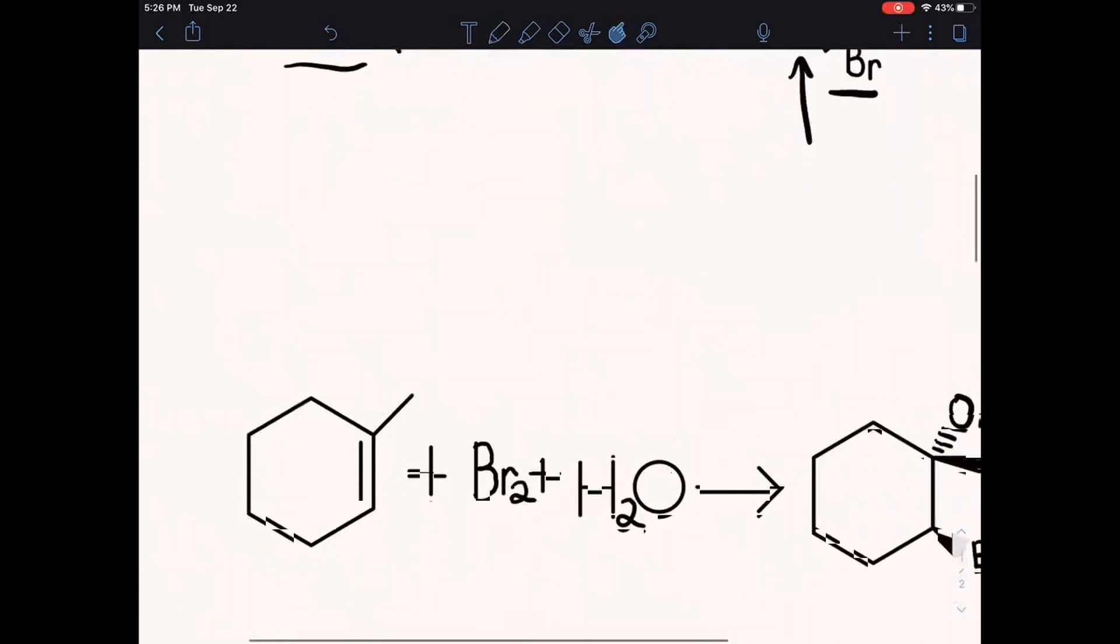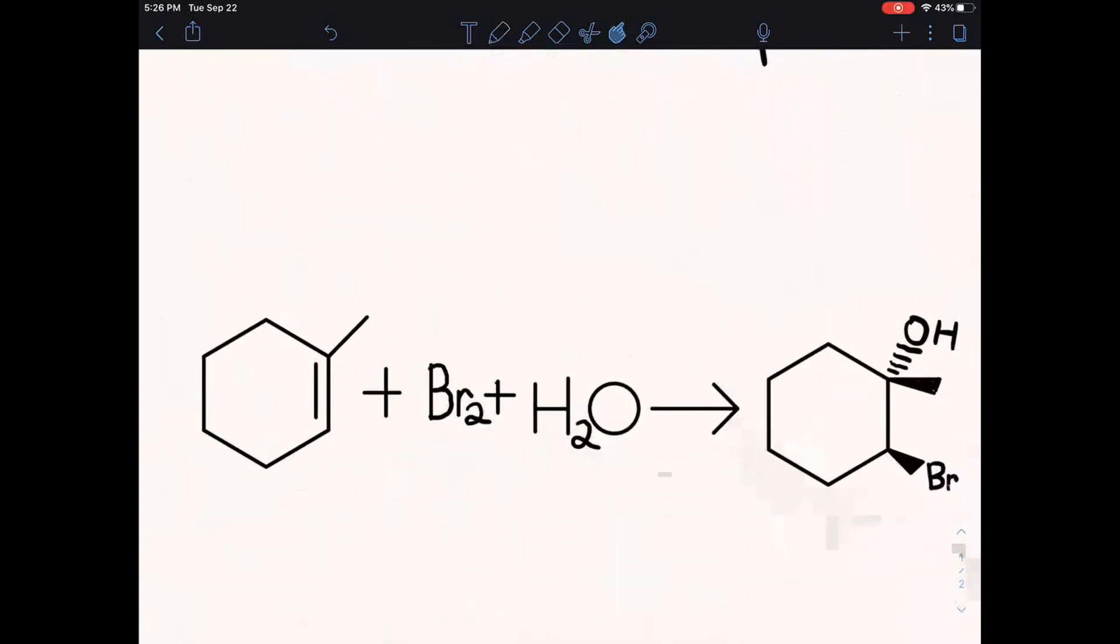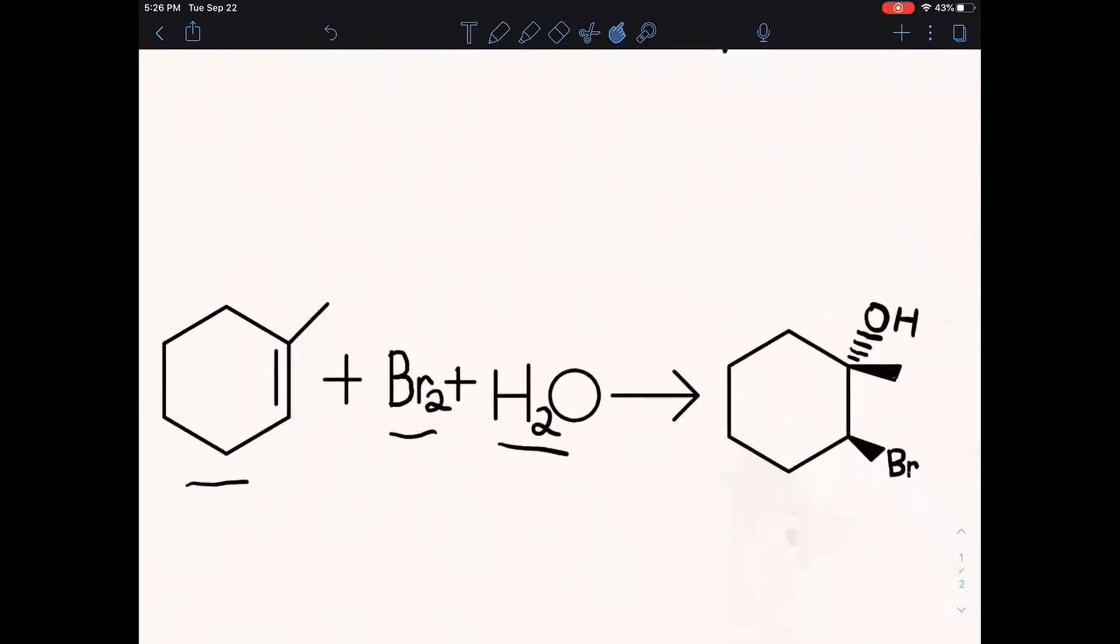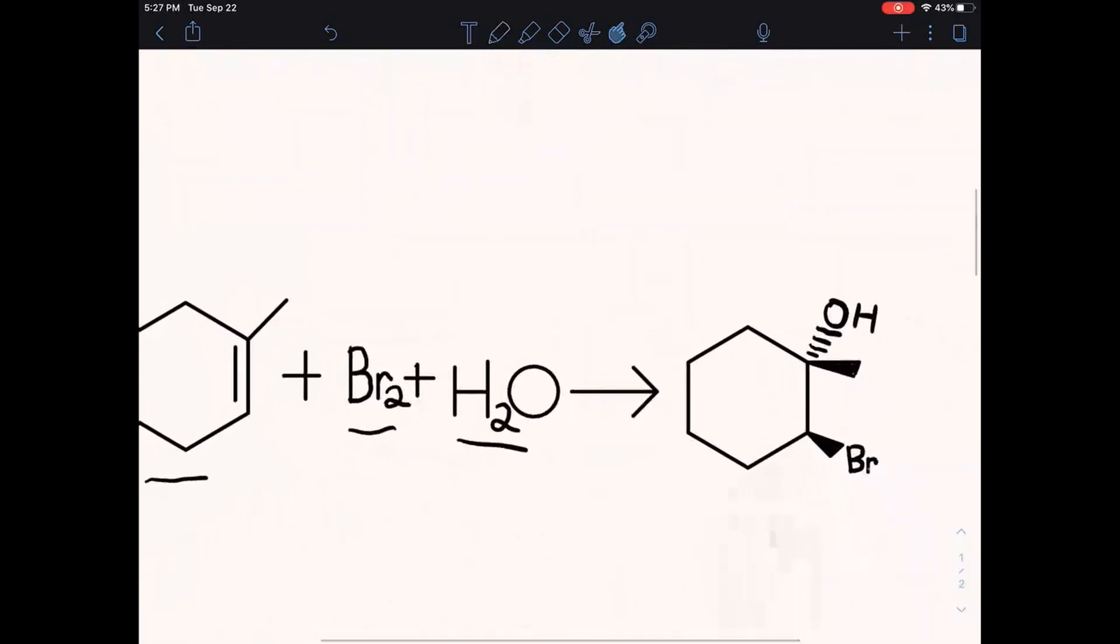You can have both stereoselectivity and regioselectivity in a single reaction. When a bromine and a water molecule react with an alkene, there's going to be one bromine and one OH attached to either side of the alkene. The OH and the bromine are always going to be anti to each other. One will be up, one will be down.